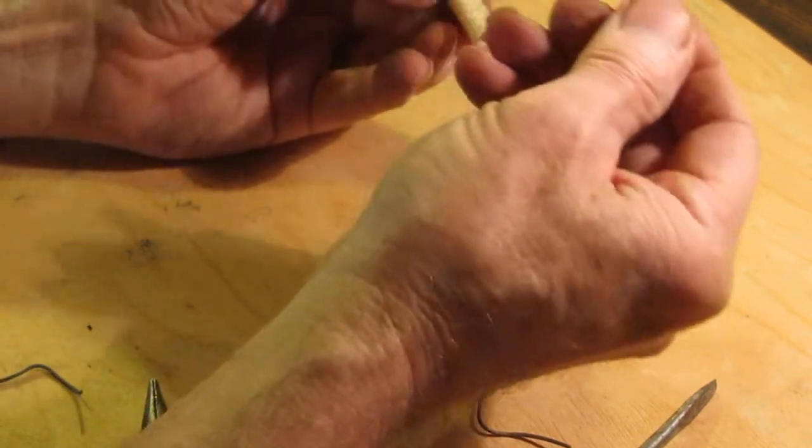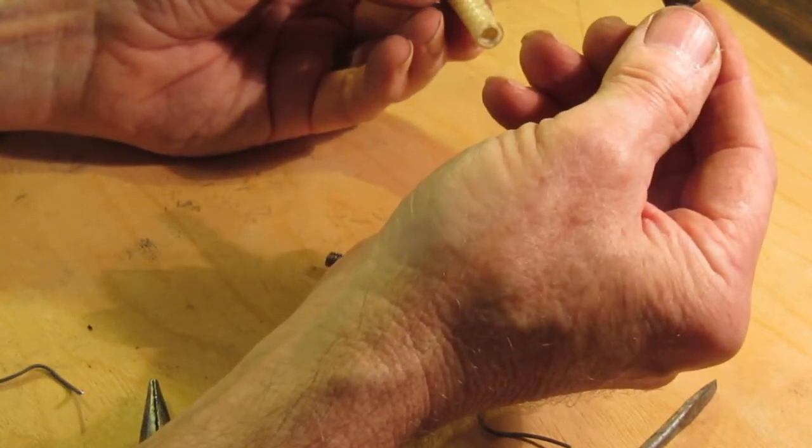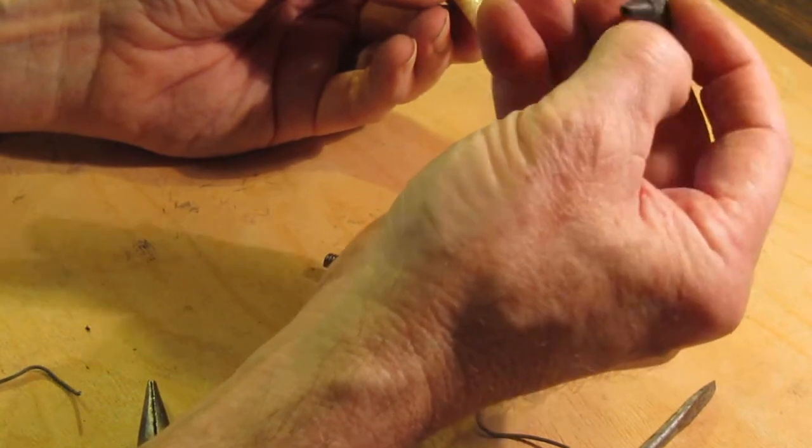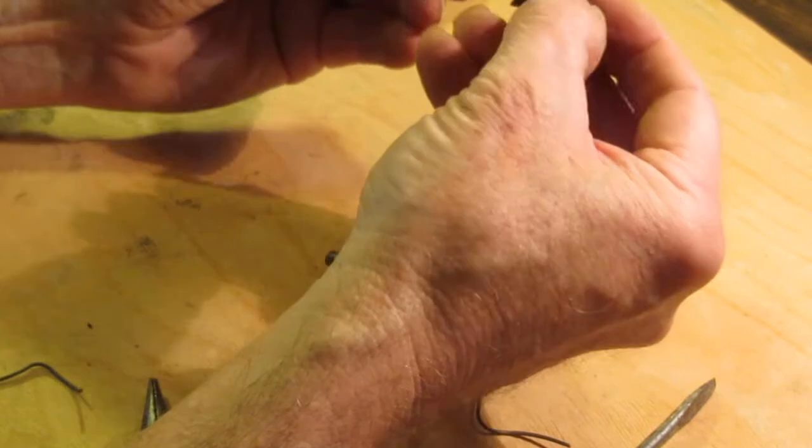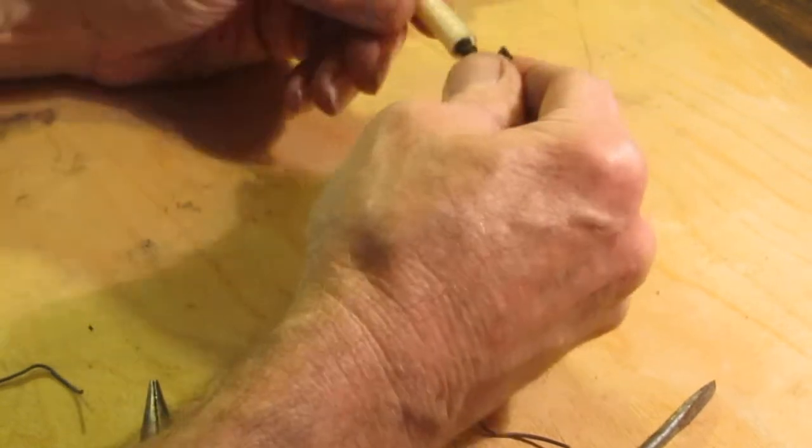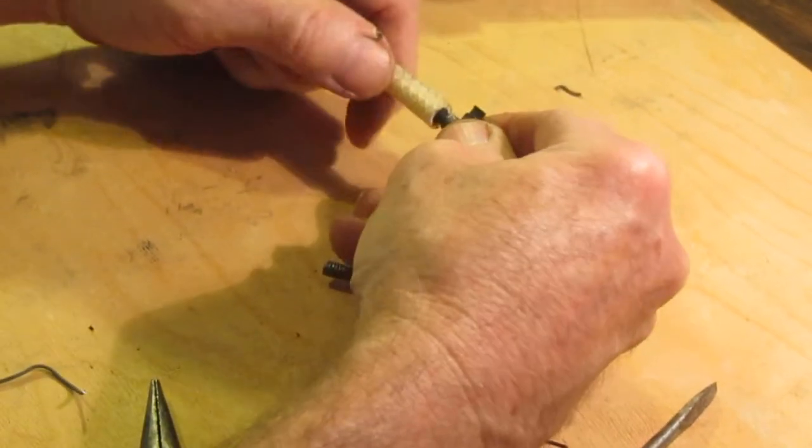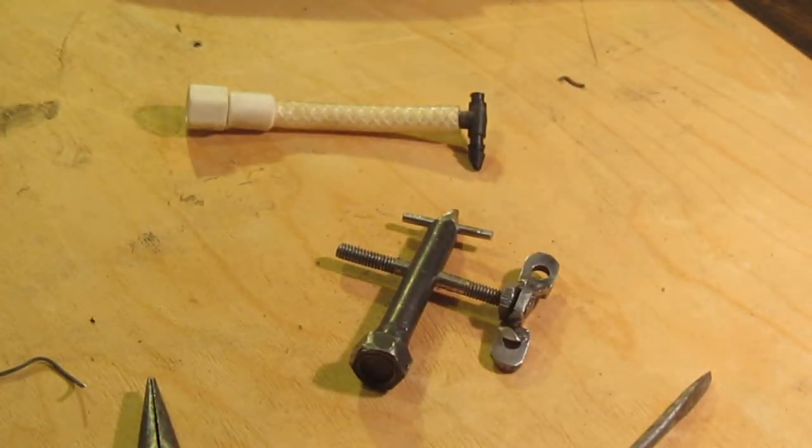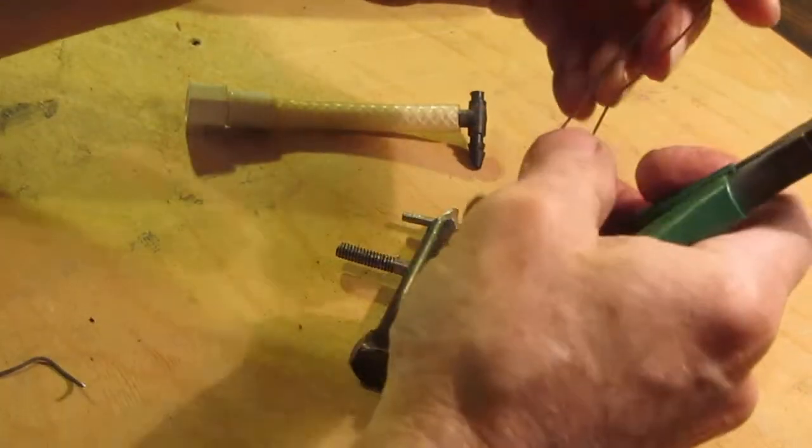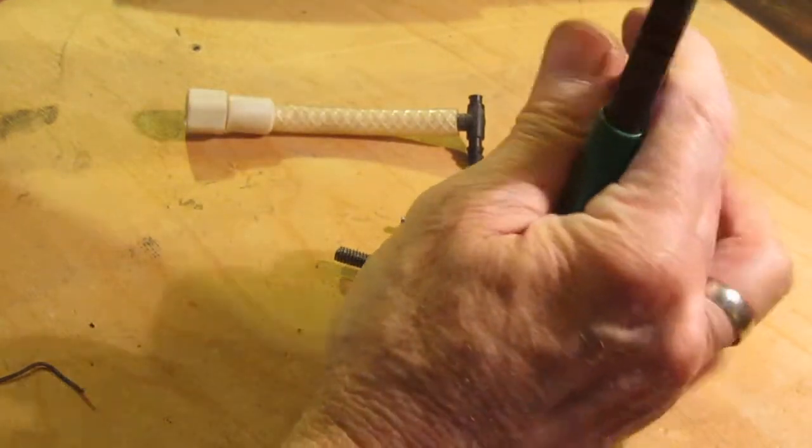So I used these drip irrigation tees. This is a broken one here, I'm just going to use for the demo. Push it into the tubing. And again, get another small piece of wire, form it like that.